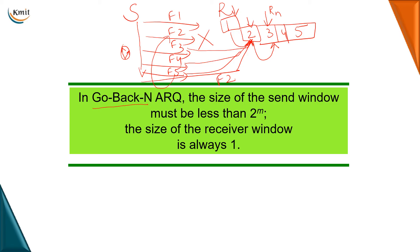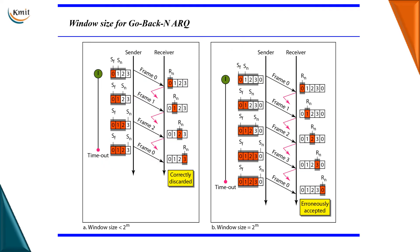Another important rule in Go-Back-N ARQ: the size of the send window must always be less than 2^m, and the size of the receiver window must always be 1. Let's see why this constraint is necessary.